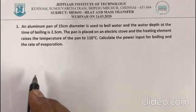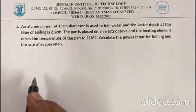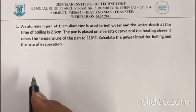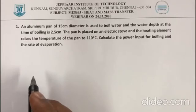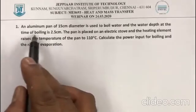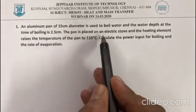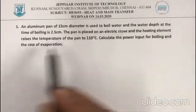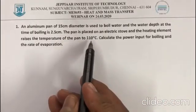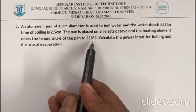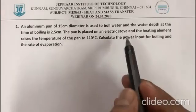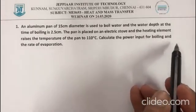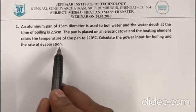We have an important problem here: an aluminum pan of 15cm diameter is used to boil water, and the water depth at the time of boiling is 2.5cm. The pan is placed on an electric stove and the heating element raises the temperature of the pan to 110°C. Calculate the power input for boiling and the rate of evaporation.